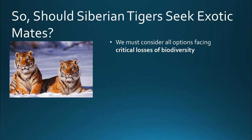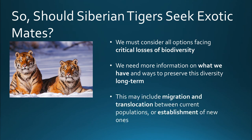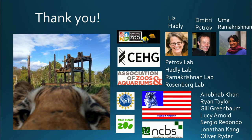So I'll ask you again: should Siberian tigers seek exotic mates? This is a complicated question with no straightforward answer. But we must consider all of our options given the critical losses in biodiversity we are experiencing and these shrinking population sizes. We need more information on what diversity we have and ways to preserve it long term. Genomic sequencing of non-model organisms such as the tiger can help us make these decisions, which may include migration and translocations between current populations or establishment of new ones. Remember that we need to think about biodiversity loss at smaller levels too, so that we give remaining species the best possible chance of survival and enhance their genetic toolkits into the future.